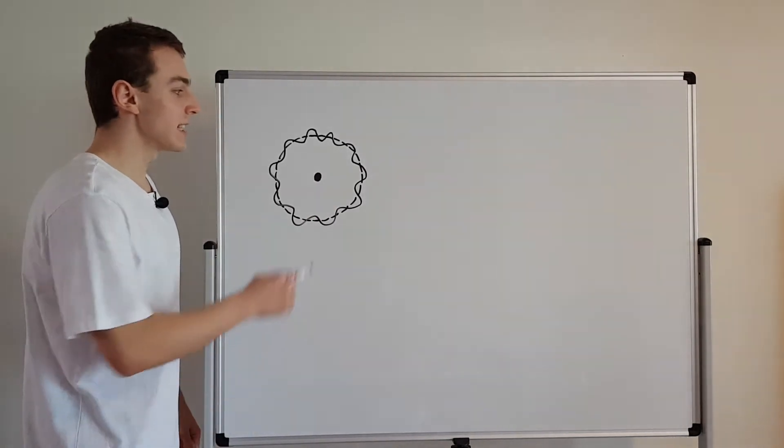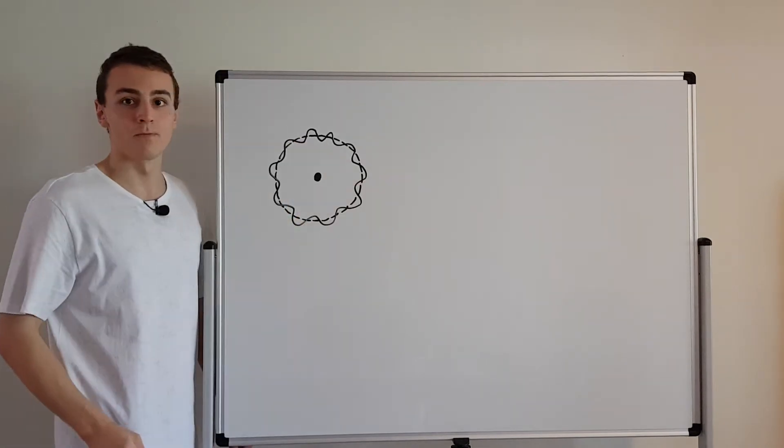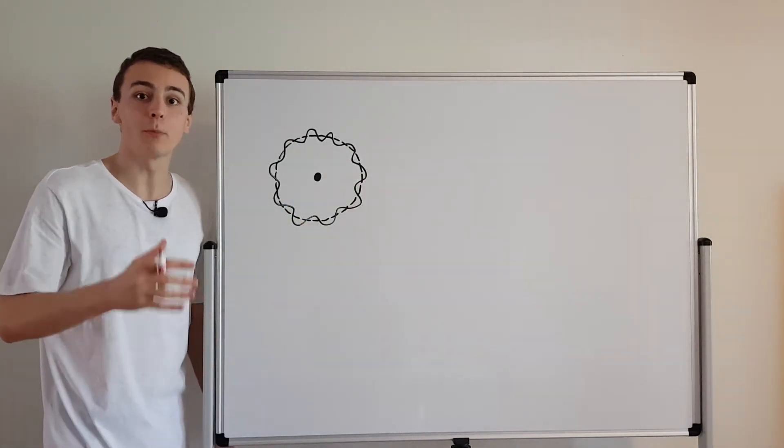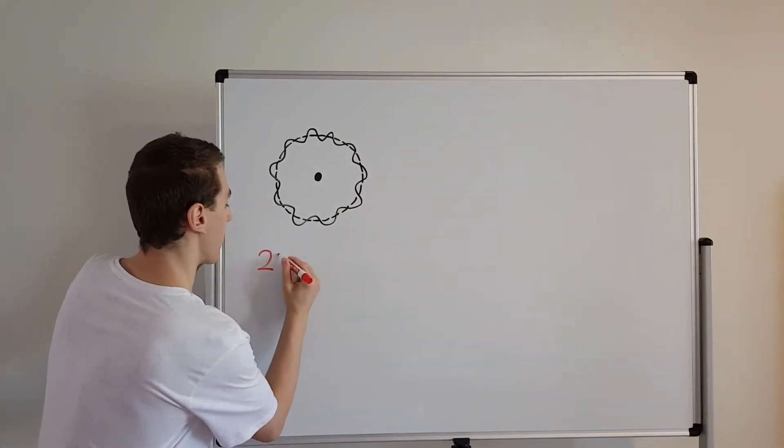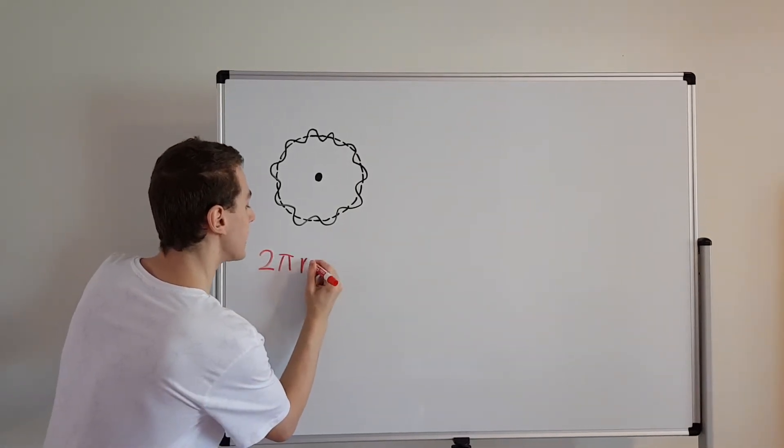First of all what is the circumference of this circle? Well the circumference is given by 2 pi r. Let's write that down. So we have 2 pi r. That's the circumference.